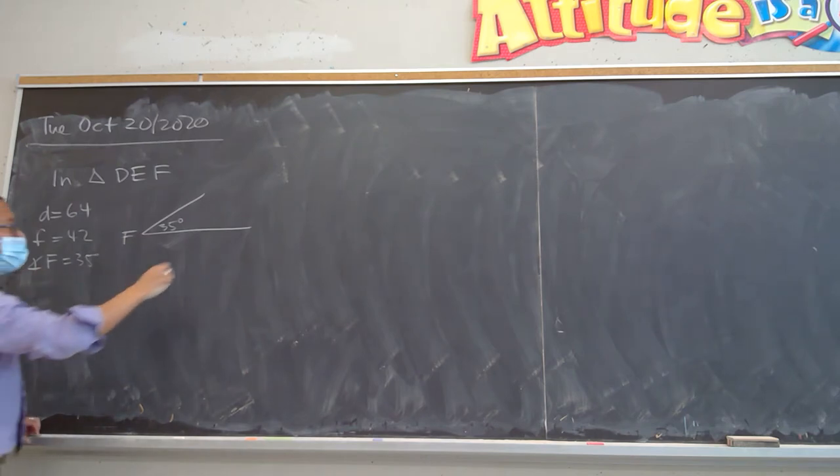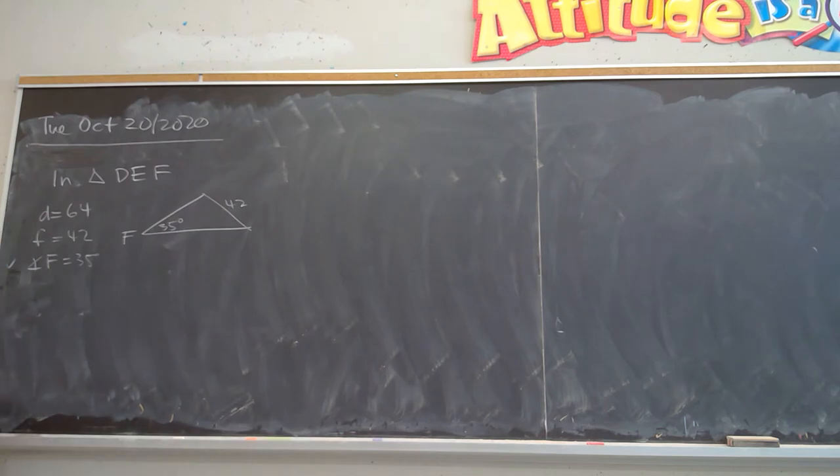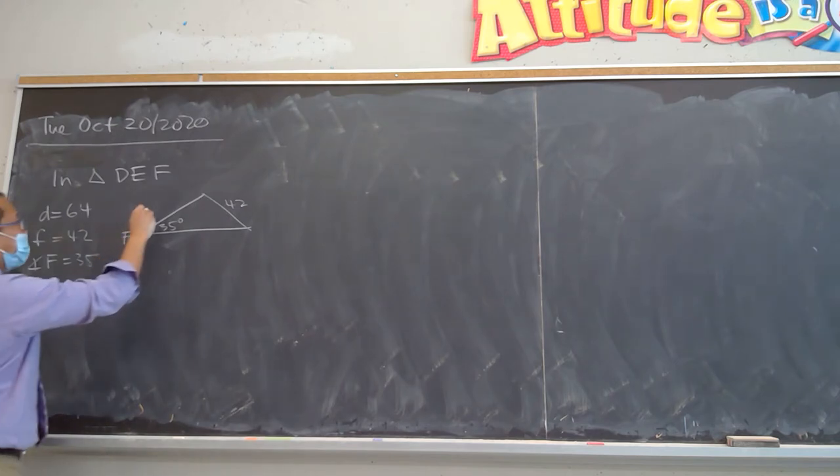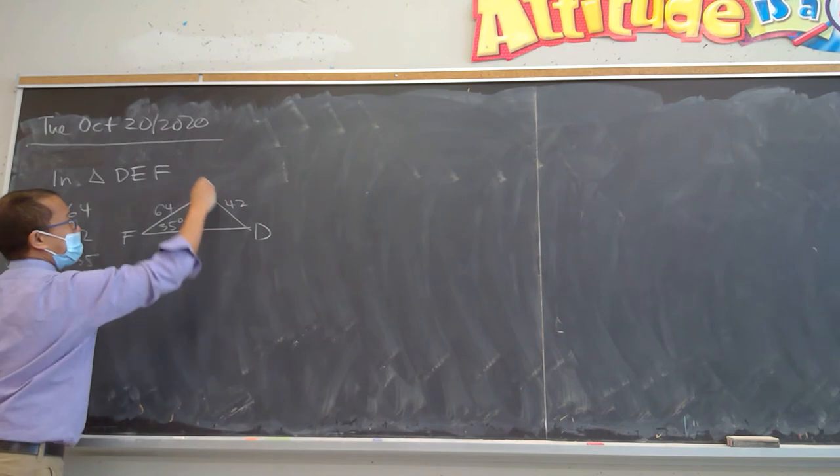That means side F is over here. That's going to be like 42. And we're just drawing a sketch, so we're not too sure exactly if this is true or not. But where am I going to put that 64? I think a lot of you know I'm going to put 64 over here. That means this is angle D and this is side D.